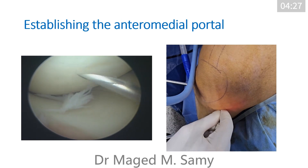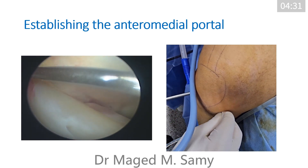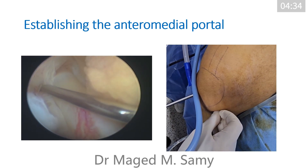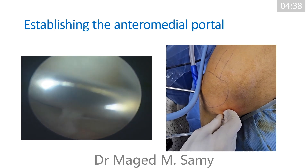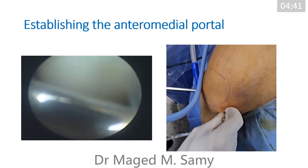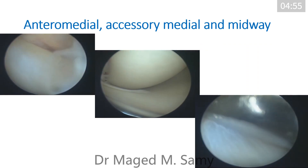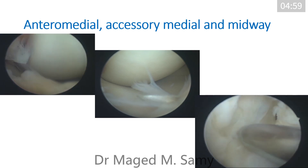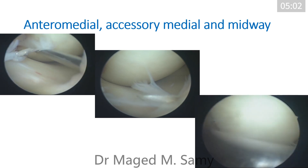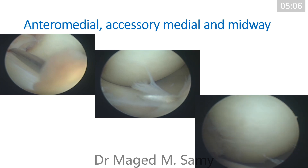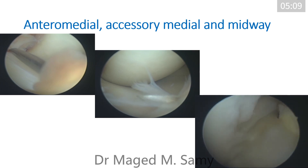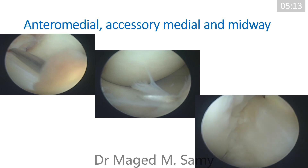Establish the anteromedial portal under vision using a needle while looking from the anterolateral portal. You can make a standard anteromedial portal or an accessory medial portal. In cases of ACL reconstruction, you can make a portal somewhere in between to serve both purposes. Always use the needle first to confirm the correct position before making your incision. For trans-portal drilling of the femoral tunnel in anatomic ACL reconstruction, you need to go more medial and distal to be directed toward the lateral femoral condyle for your tunnel.